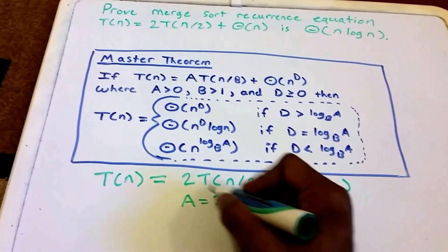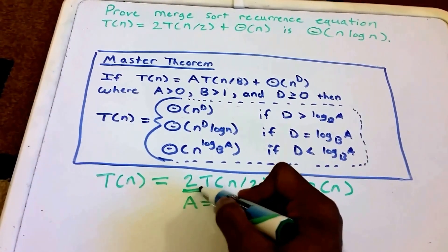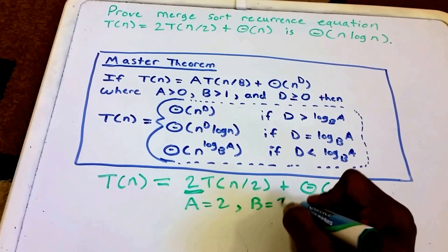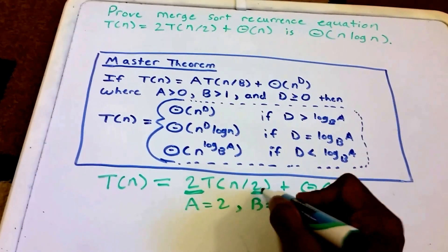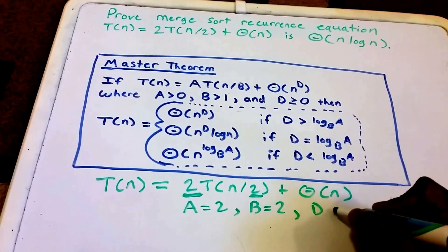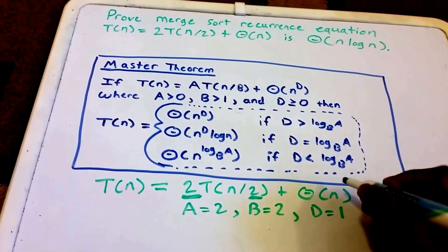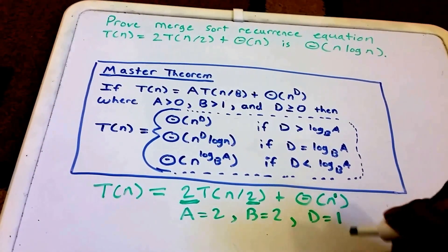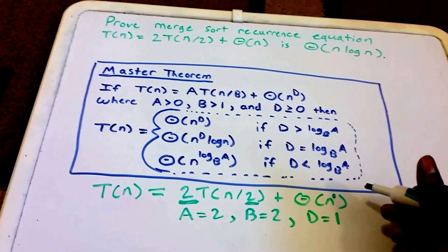Our A = 2, and we get that from this 2 here. Our B is also equal to 2, and we get that from this 2 here. And then our value D = 1, and we get that from this assumed 1 there—n to the power 1 is still equal to n.